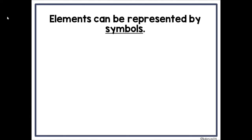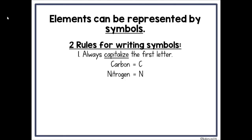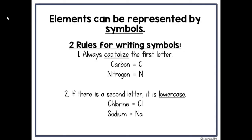Elements can be represented by symbols. There are two rules for writing symbols. Rule one: always capitalize the first letter — for carbon, a big uppercase C, and for nitrogen, an uppercase N. Rule two: if there's a second letter, it's always lowercase. For example, chlorine is big C and a little L. Be careful that the little L is not mistaken for an uppercase I — make sure you have crossbars. Sodium is an uppercase N and a little A.